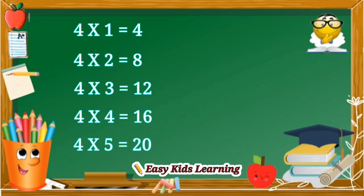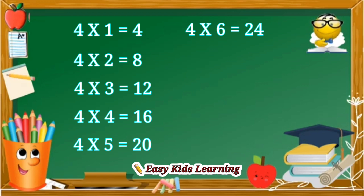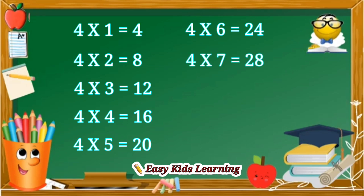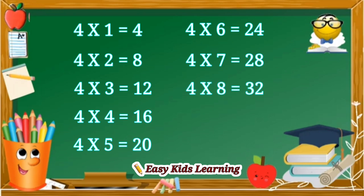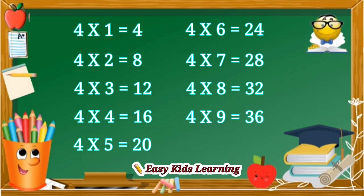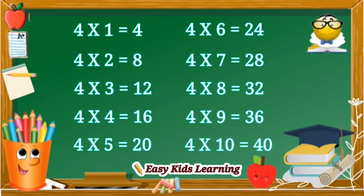Four fives are twenty. Four sixes are twenty-four. Four sevens are twenty-eight. Four eights are thirty-two. Four nines are thirty-six. Four tens are forty.